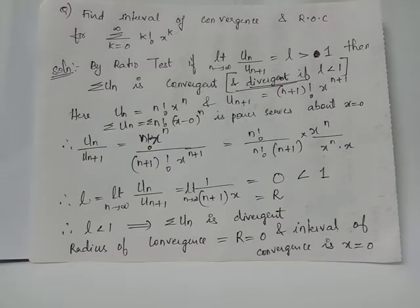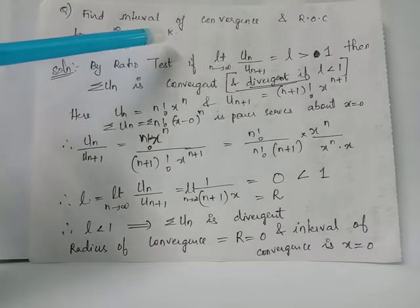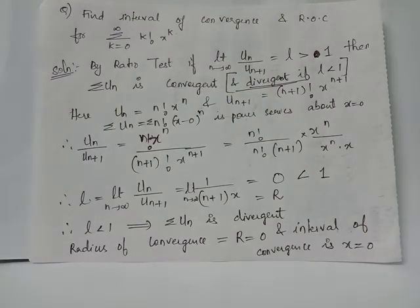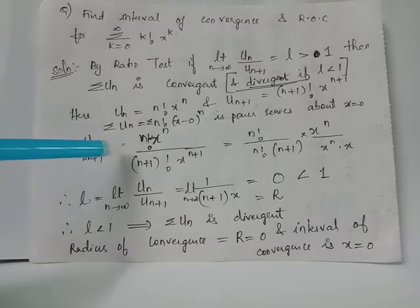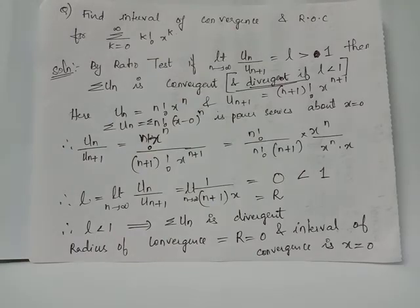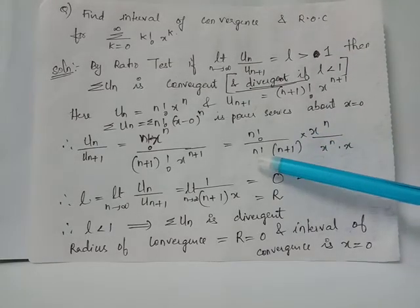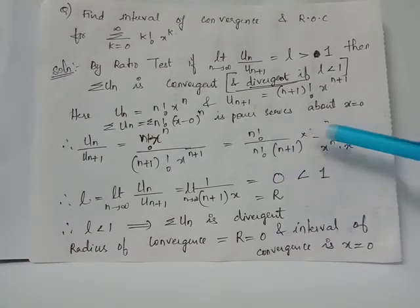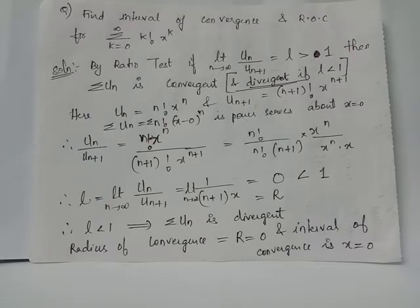In order to find the radius of convergence R, we have R equals limit n tends to infinity of u_n by u_{n+1}. Here the general nth term u_n equals n factorial times x raised to n, and u_{n+1} equals n+1 factorial times x raised to n+1. Evaluating u_n by u_{n+1} gives n factorial times x raised to n, divided by n+1 factorial times x raised to n+1. Writing x^{n+1} as x^n times x, and (n+1)! as n! times (n+1), n factorial and x^n cancel, leaving u_n by u_{n+1} equals 1 over (n+1) times x.